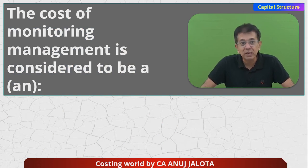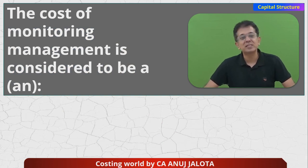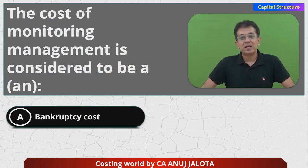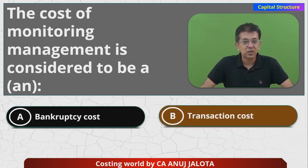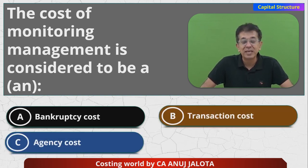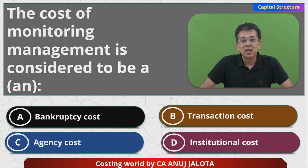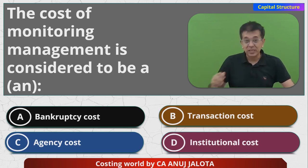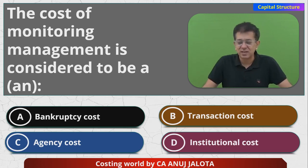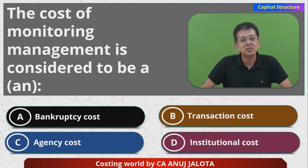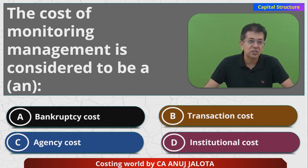One of the very important things is something called Agency Problems. The question is: the cost of monitoring management is considered to be which cost? The options are bankruptcy cost, transaction cost, agency cost, and institutional cost. The answer is agency cost.